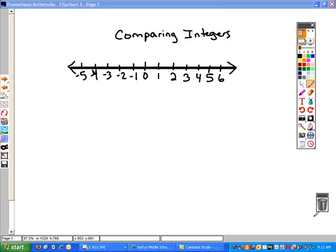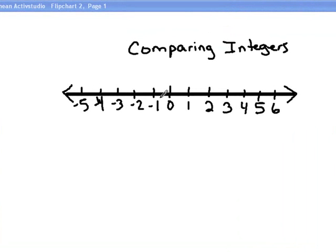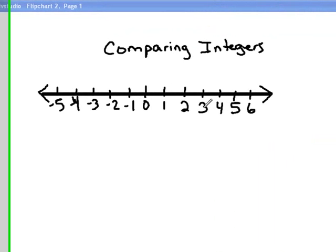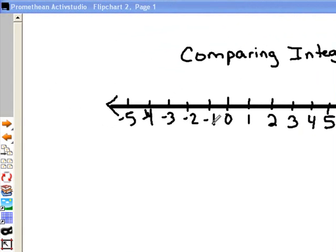Today we're going to talk about comparing integers. If we look at the number line, we notice that anything to the right of 0, as the numbers get larger, their value increases. But anything to the left of 0, as the numbers get larger, their value decreases.